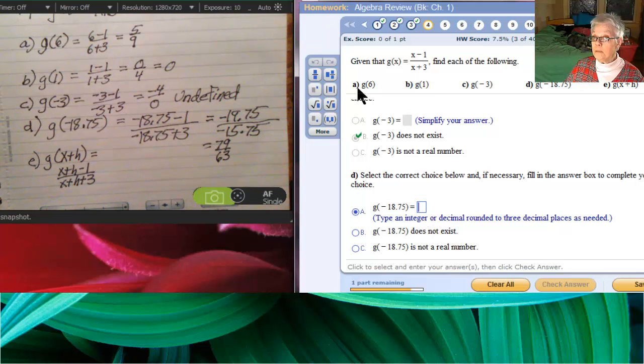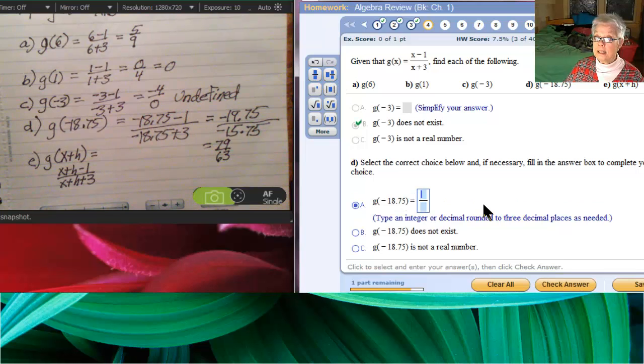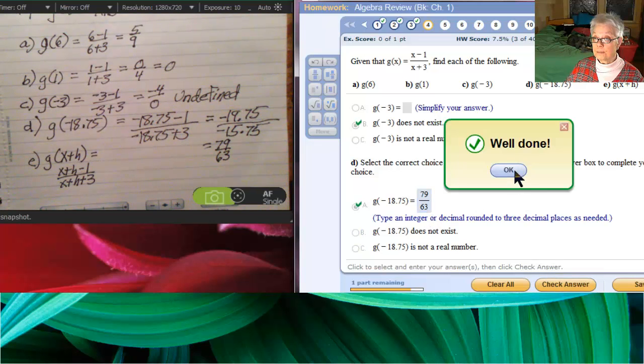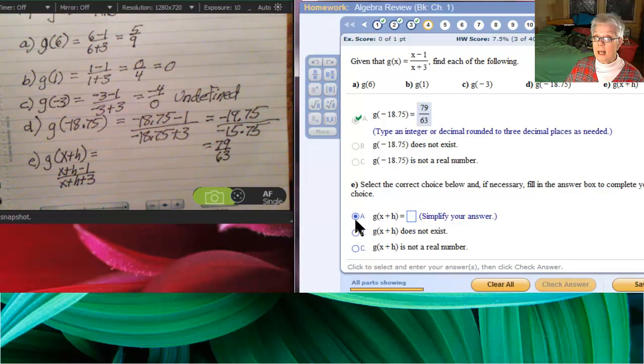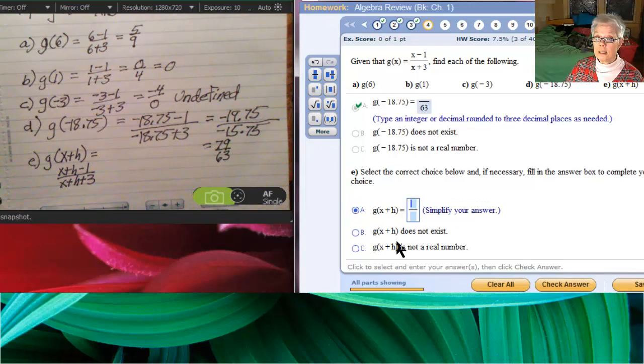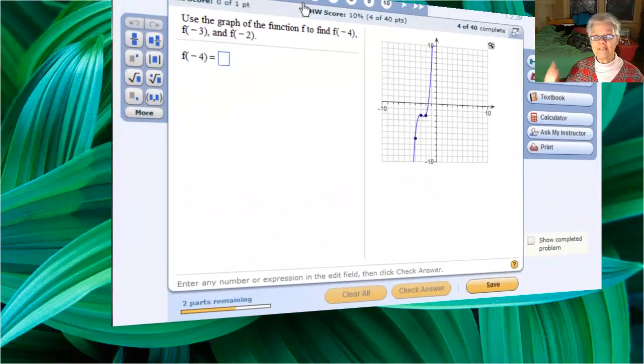g of negative 18.75 is 79 over 63. And g of x plus h equals the fraction x plus h minus 1 over x plus h plus 3. Check answer. Fantastic.